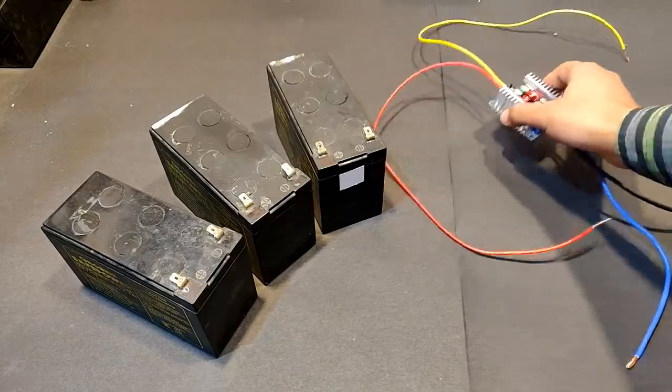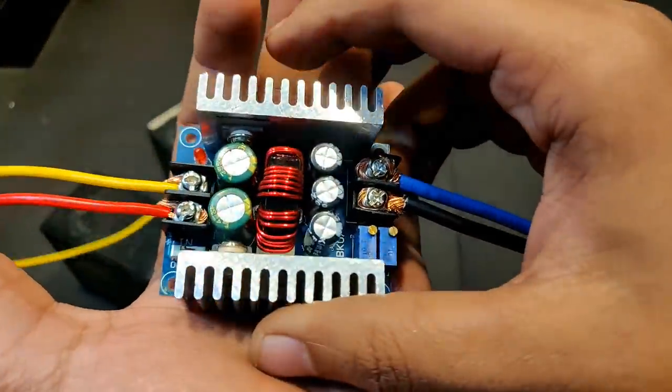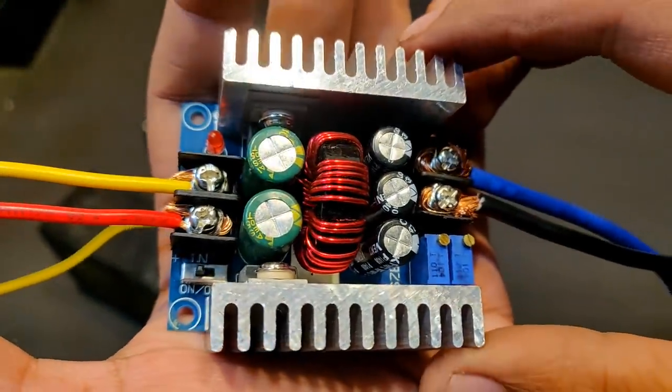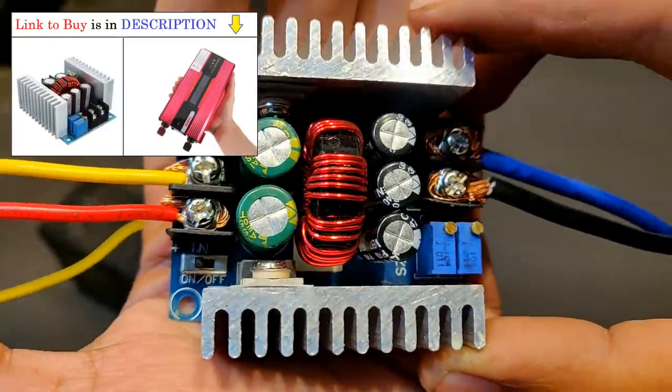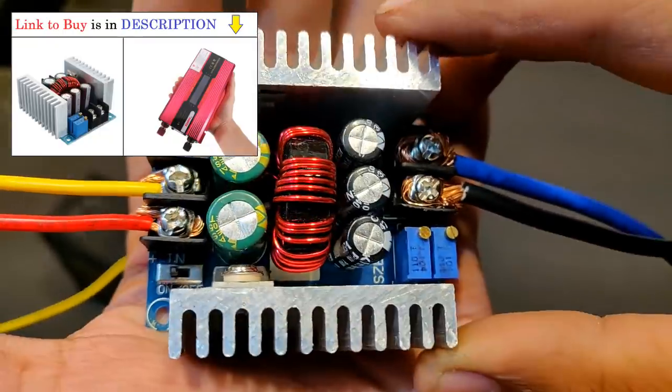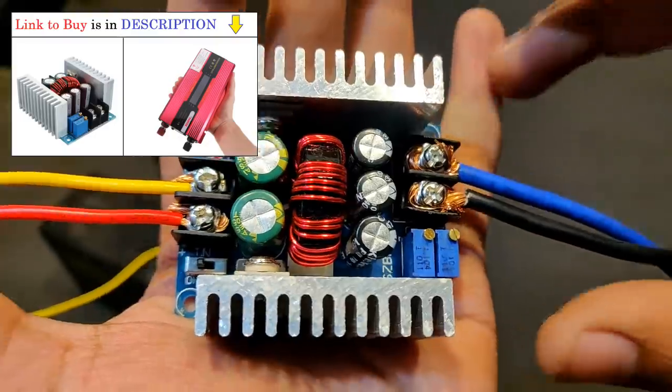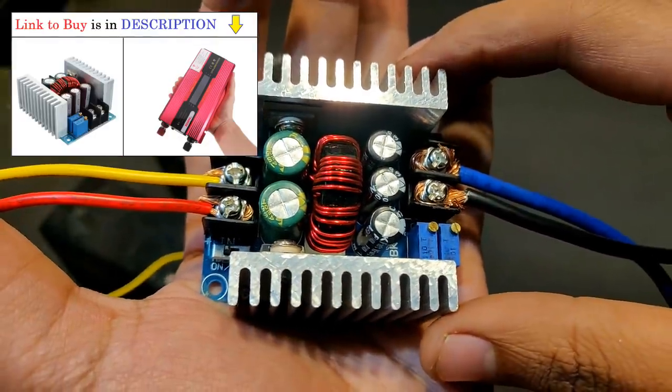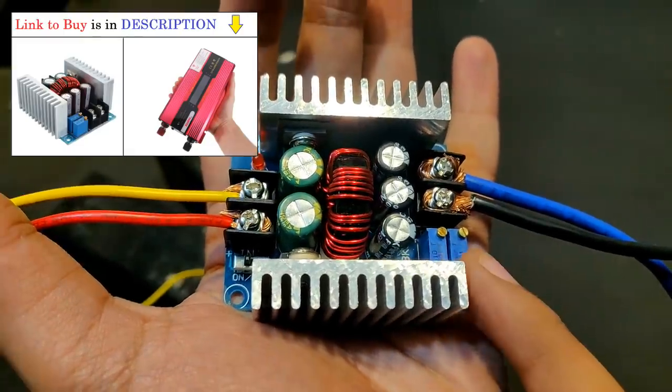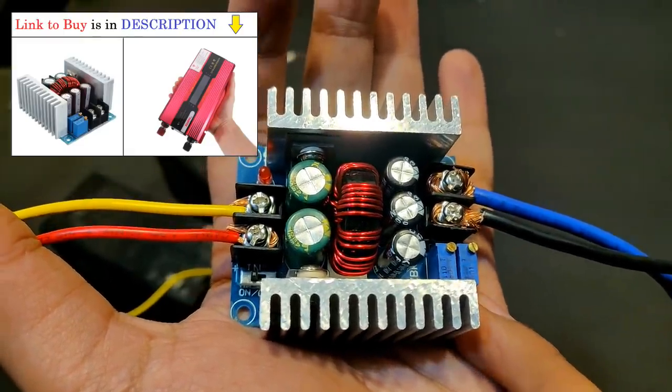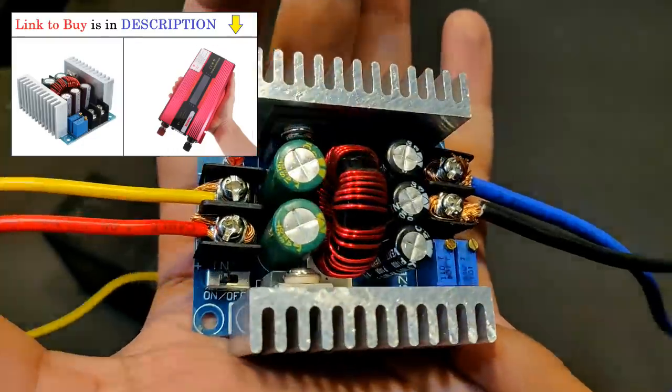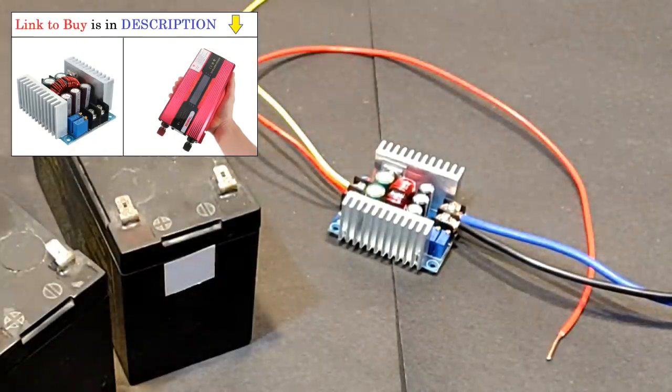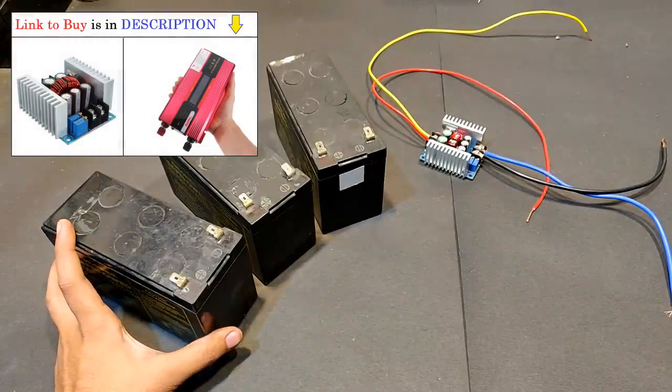Now guys, the specifications of this buck converter are it can take an input voltage from 0 to 40 volts DC and can reduce the voltage from 0 to 40 volts. So the plan is to reduce the output voltage to around 12 volts which we need for the solar inverter. And the maximum input voltage that can be given is only 40 volts, therefore I can only utilize 3 batteries making it 12 3s or 36 volts.